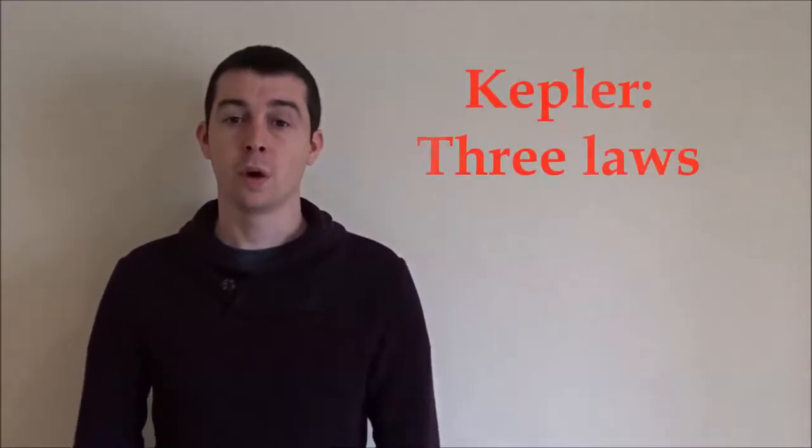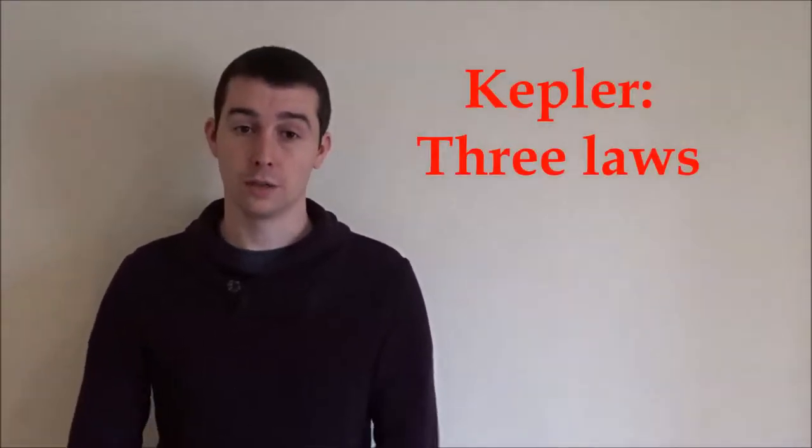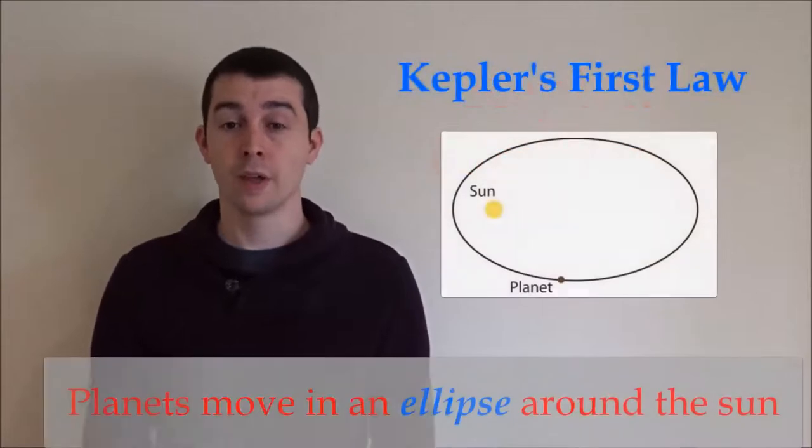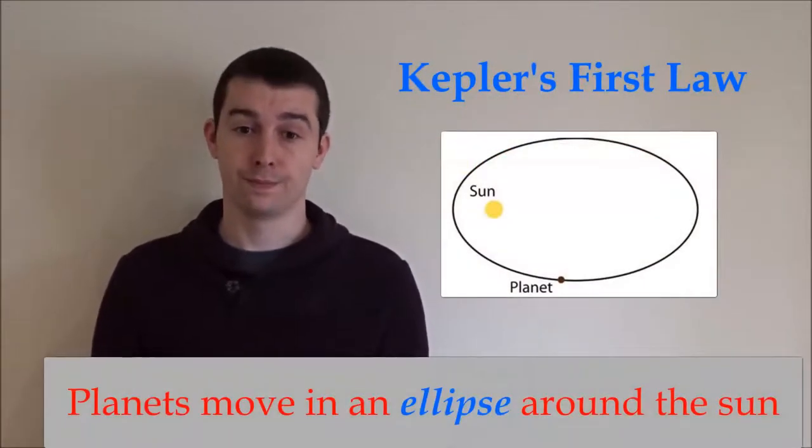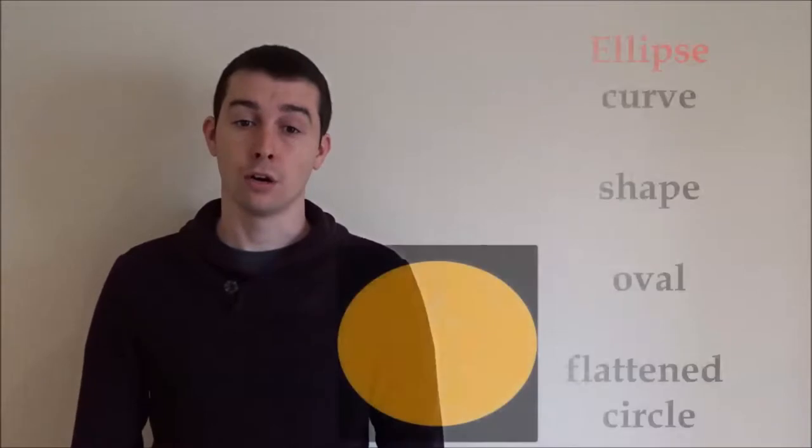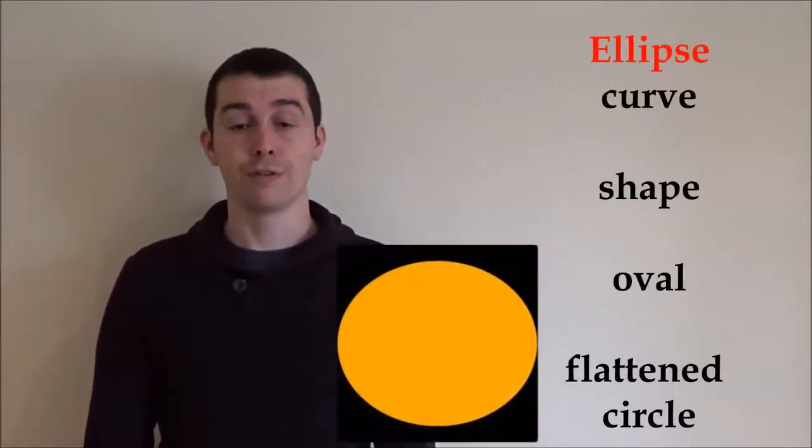Kepler found that the orbits of the planets follow three laws. The first law is that the planets move in an ellipse around the sun. An ellipse is a curve in the shape of an oval or a flattened circle.